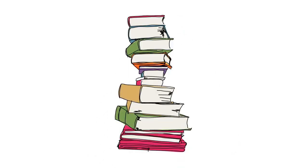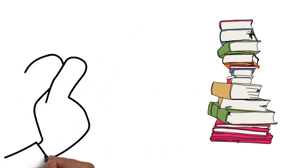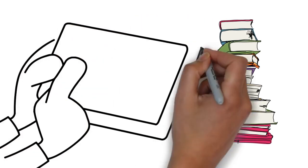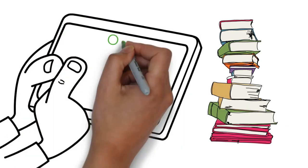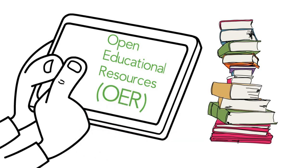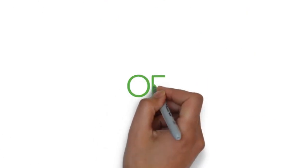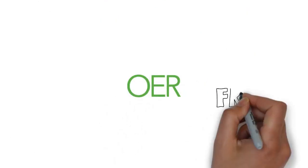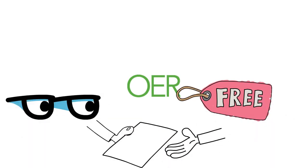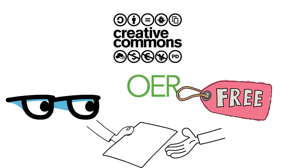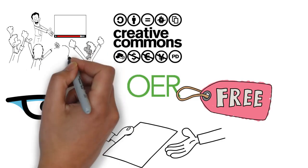But as some professors have discovered, there is an alternative to the expensive textbooks that come from commercial publishers. These alternatives are called Open Educational Resources, or OER. OER are teaching and learning materials that are free and give students permissions to access, read, and share them. These resources come with licenses that allow instructors to revise or remix them to better fit with their courses.